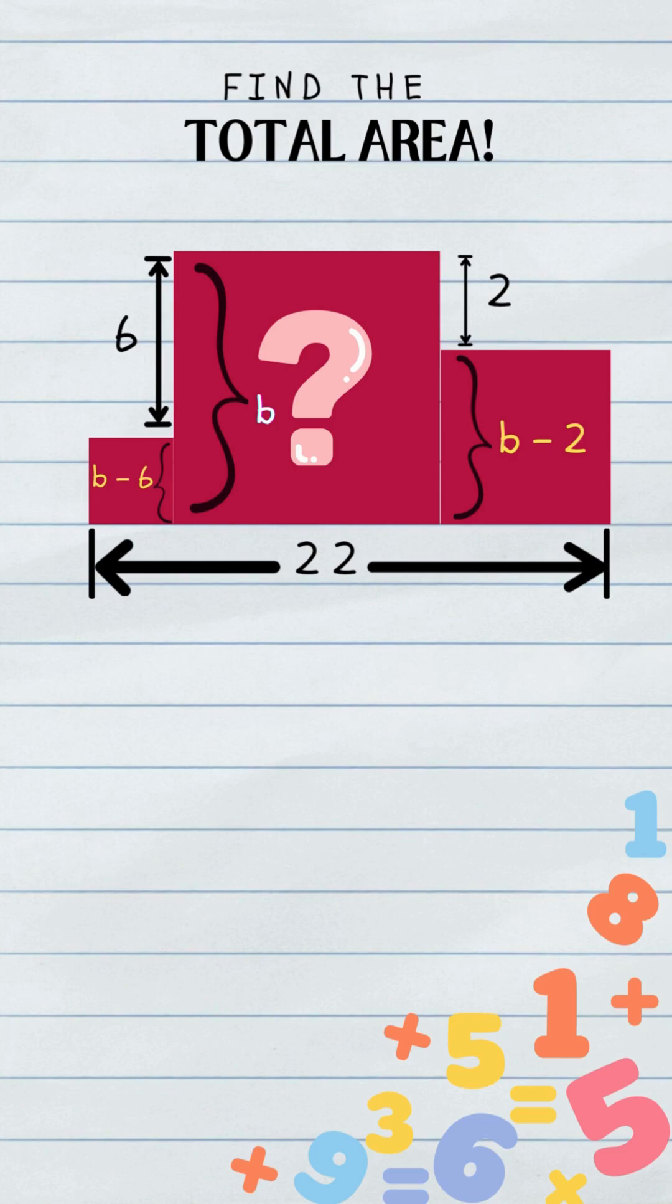And just like that, we have one variable to rule them all. So much cleaner. Now let's use that final clue to crack this thing wide open. The puzzle tells us this entire bottom length is 22. So let's add up our new side lengths.